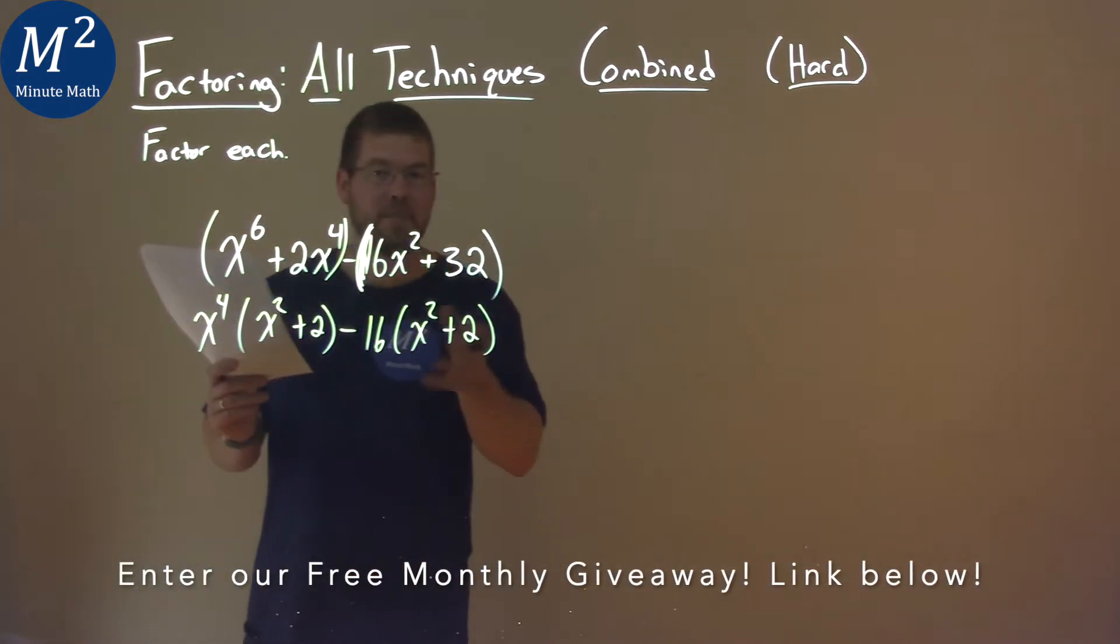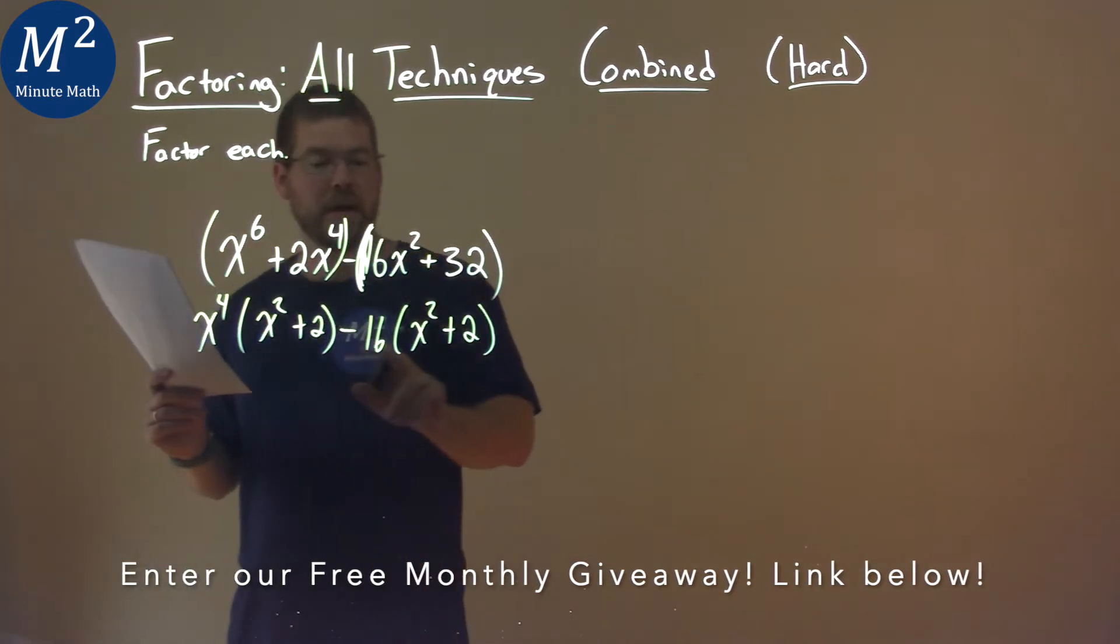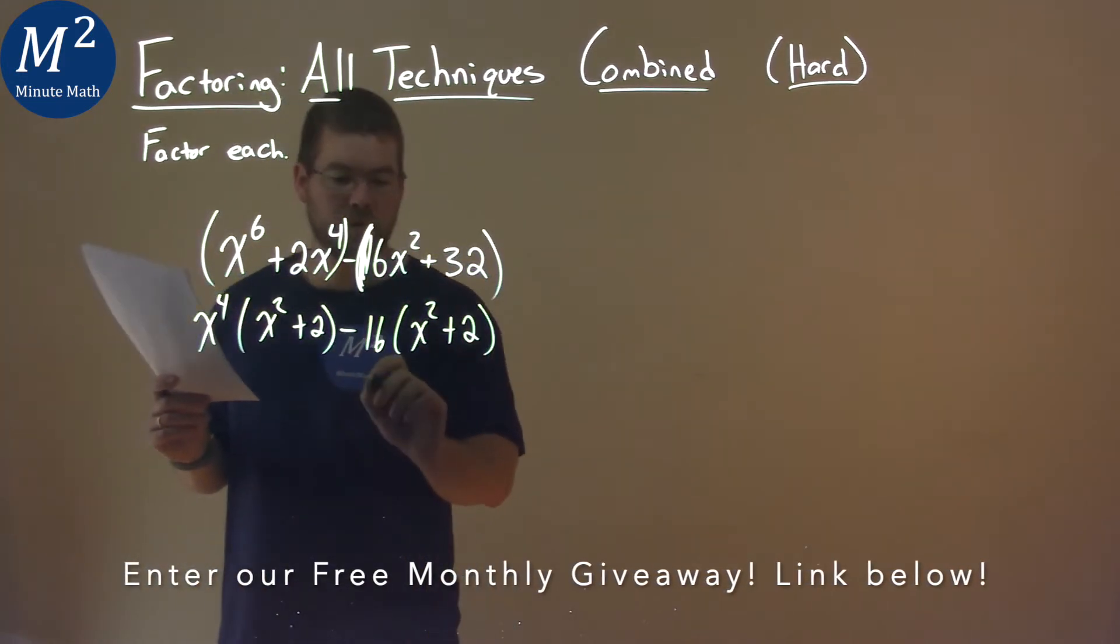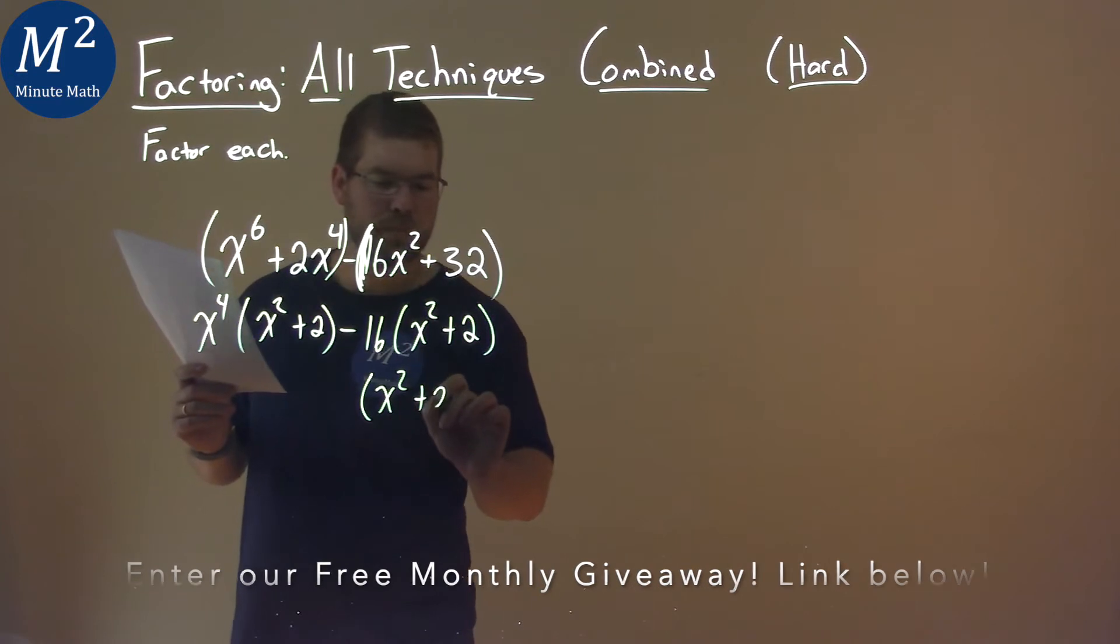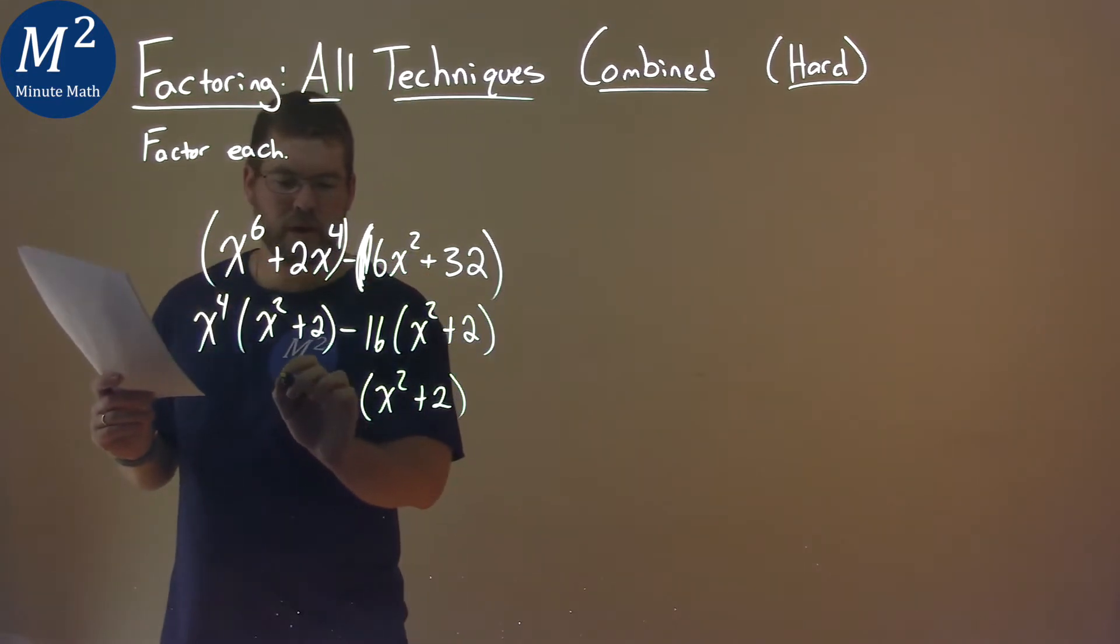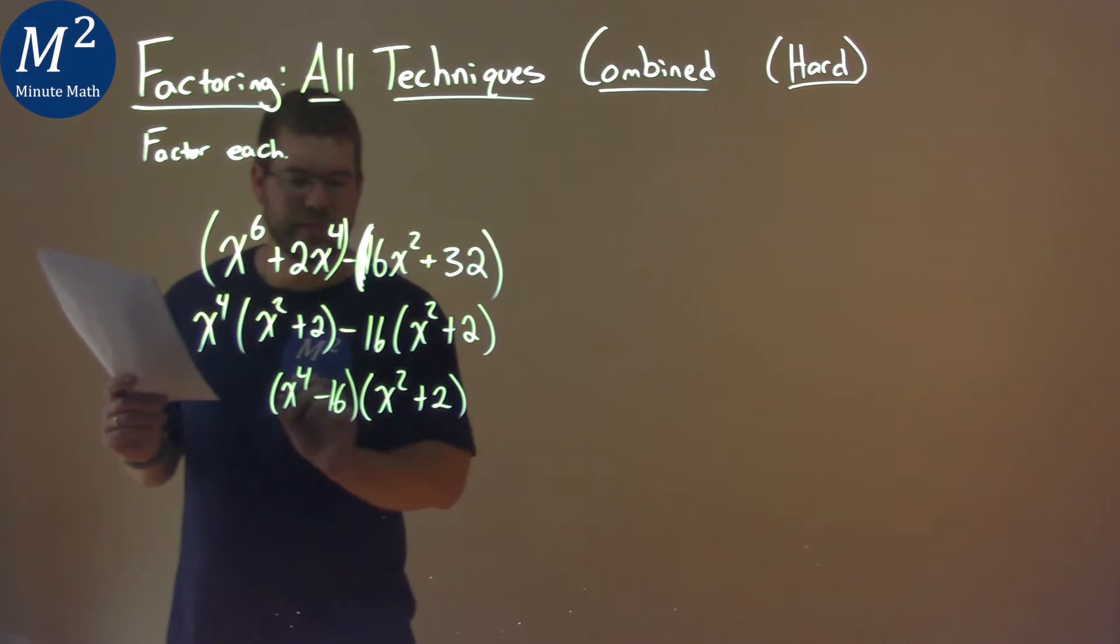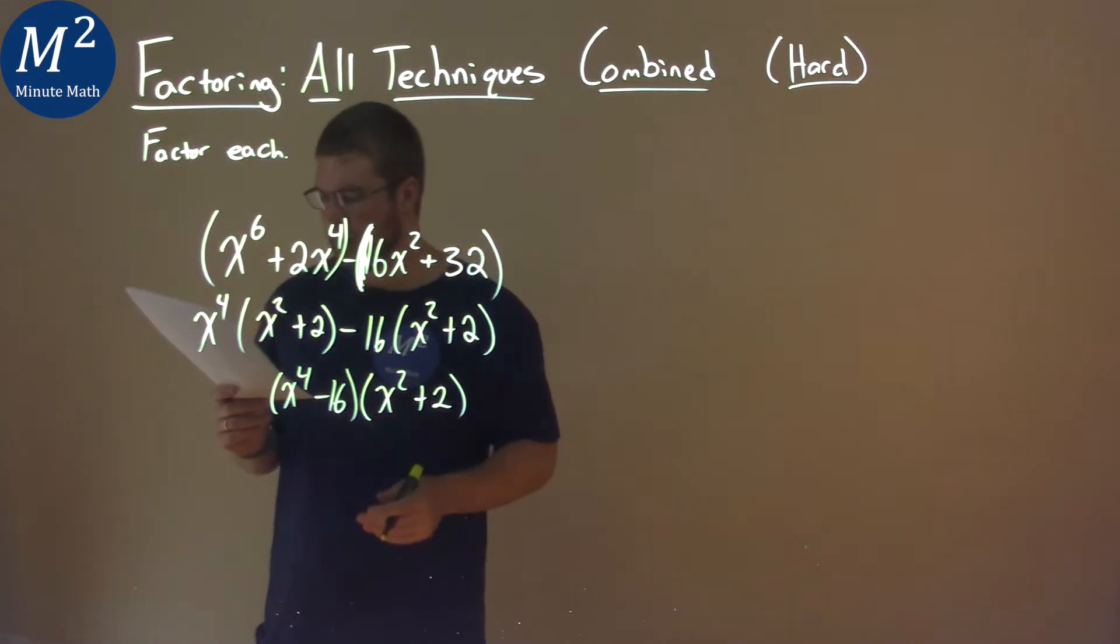Now, we can keep going with the grouping. We can pull out an x squared plus 2 that we see in both parts here. And we're left with that x to the 4th minus 16, bringing those down, being multiplied.